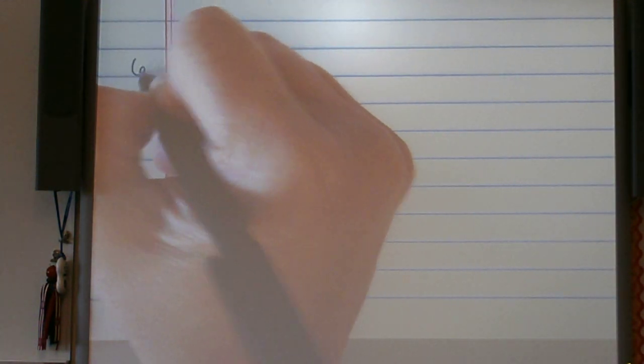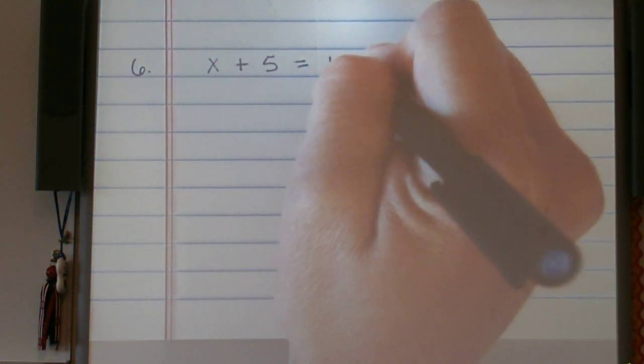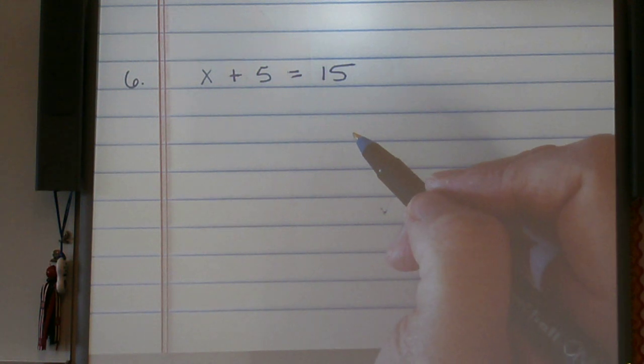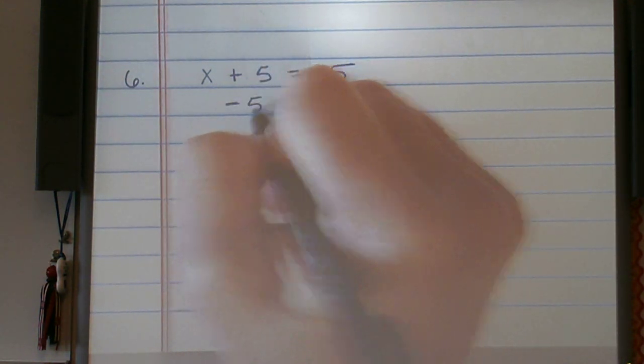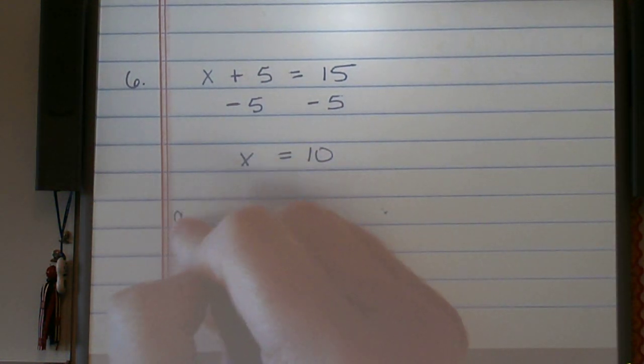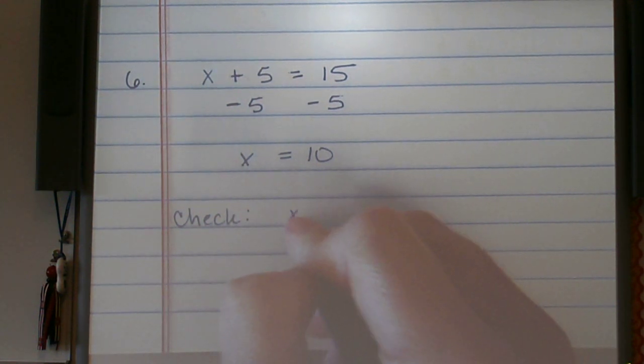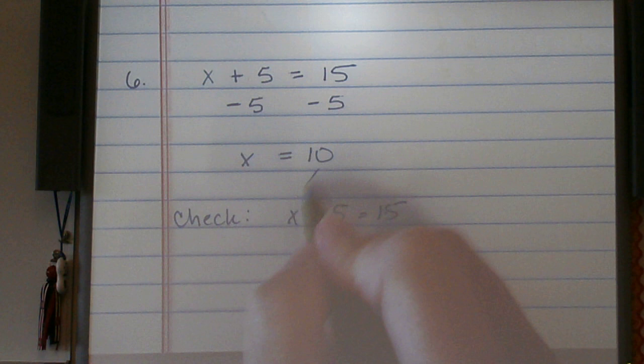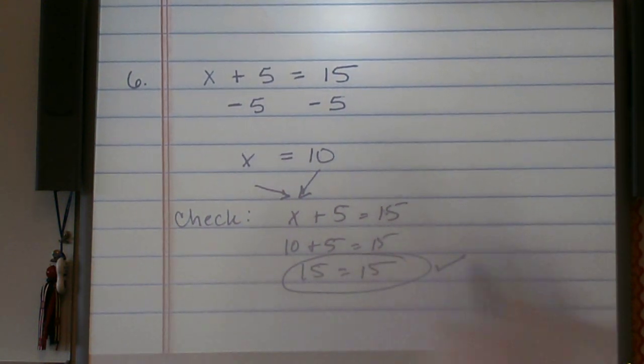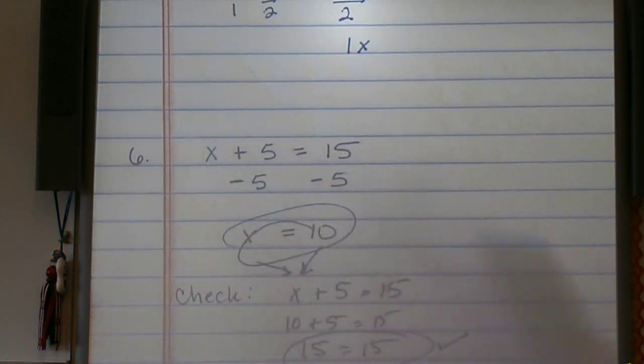Let's do one more example going back to a simple adding and subtracting. We have x plus 5 equals 15. We are adding. Our inverse operation will be subtraction. So I will subtract 5 from both sides. x equals 10. Again, I need to check my work. So I have x plus 5 equals 15. Plug my value in that I found for x. 10 plus 5 equals 15. 10 plus 5 equals 15. 15 equals 15. This works, and our answer for this is x equals 10.